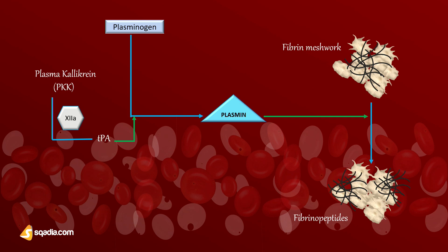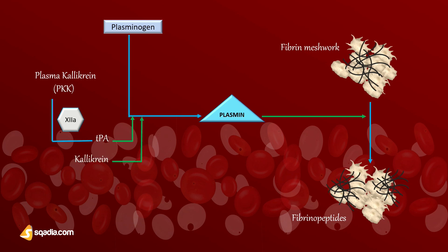This process is regulated by various activators and inhibitors. Activators of plasminogen include plasma kallikrein and factor 12 found in the blood, and tissue plasminogen activator (TPA) found in the tissues. Kallikrein also directly activates plasminogen, and from urine we have urokinase as an activator. Therapeutically, streptokinase or urokinase are used to activate plasminogen and dissolve a thrombus located in a blood vessel.